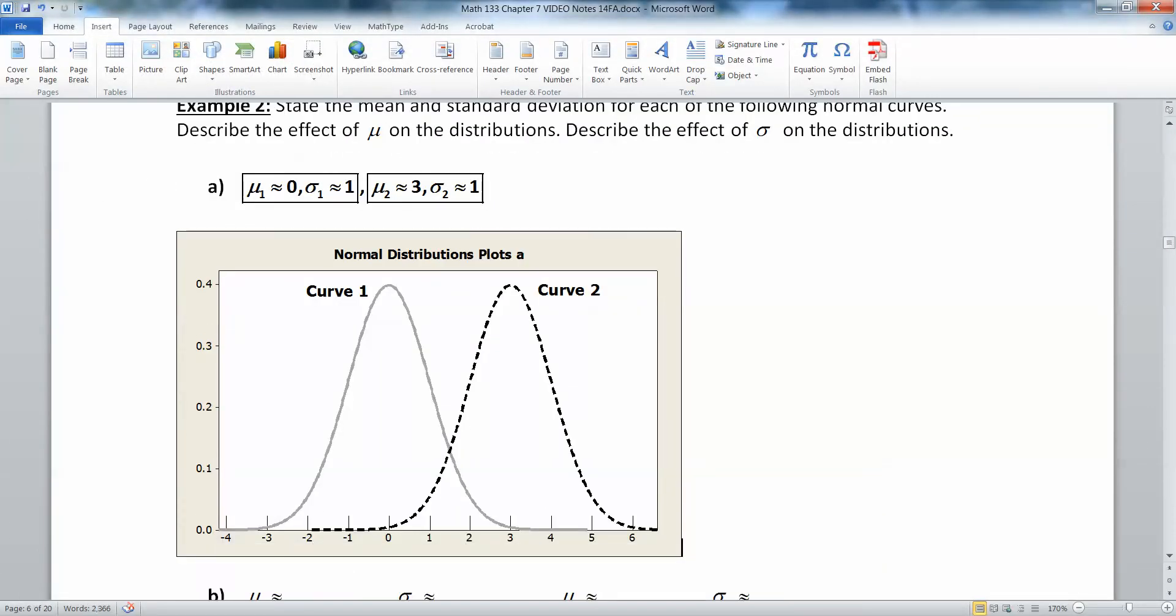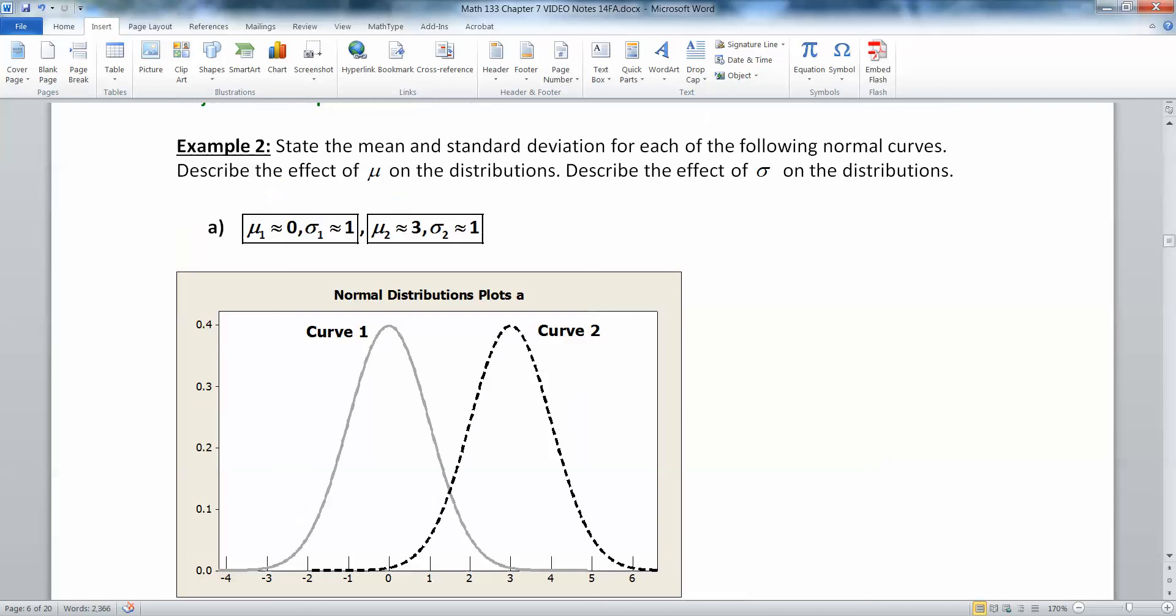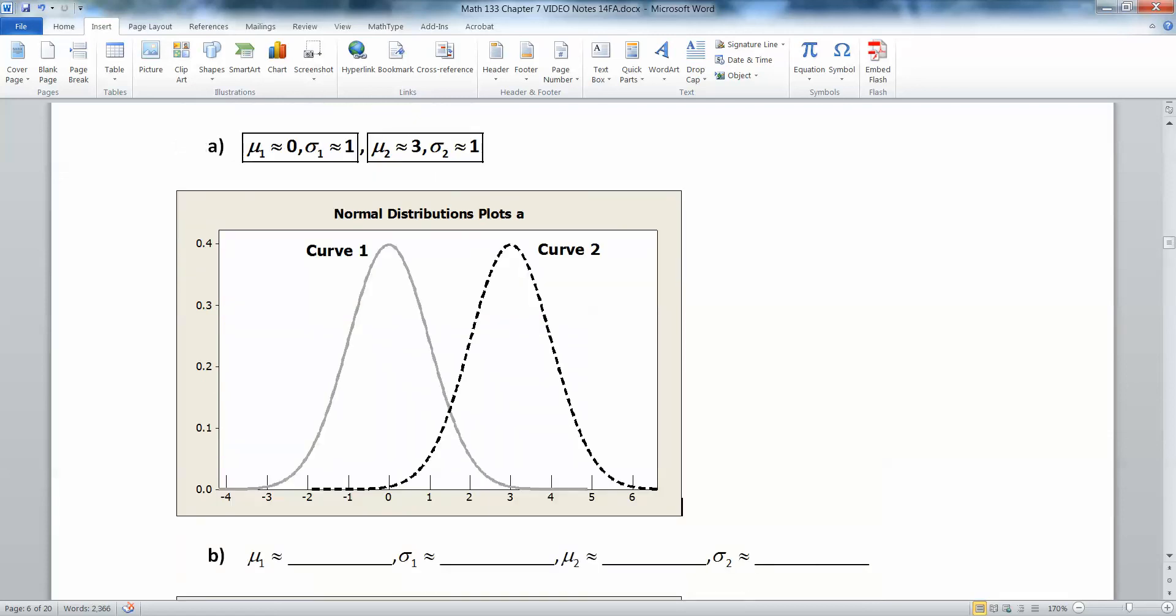And there we have it. Now, why do they have the same standard deviation? Well, you can see they actually have an identical shape. The shape is what is determined by the standard deviation. So when they have the same shape like this, that means their standard deviations are the same. What's different about the two curves is their center. The center on the gray curve is at 0. The center on the dashed curve is around 3. So their centers are shifted apart from each other, but their standard deviations are not. They are the identical because they have the same lovely shape.